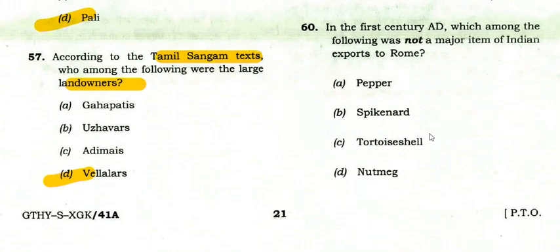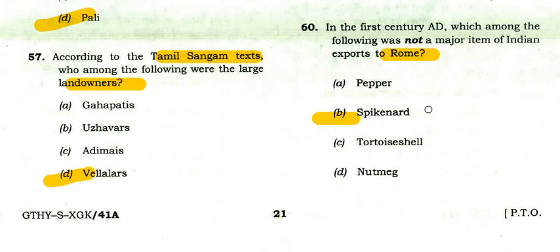In the first century AD, which among the following was not a major item of Indian exports to Rome? The right option is spikenard — India exported pepper, tortoise shell, and nutmeg but was not exporting spikenard.